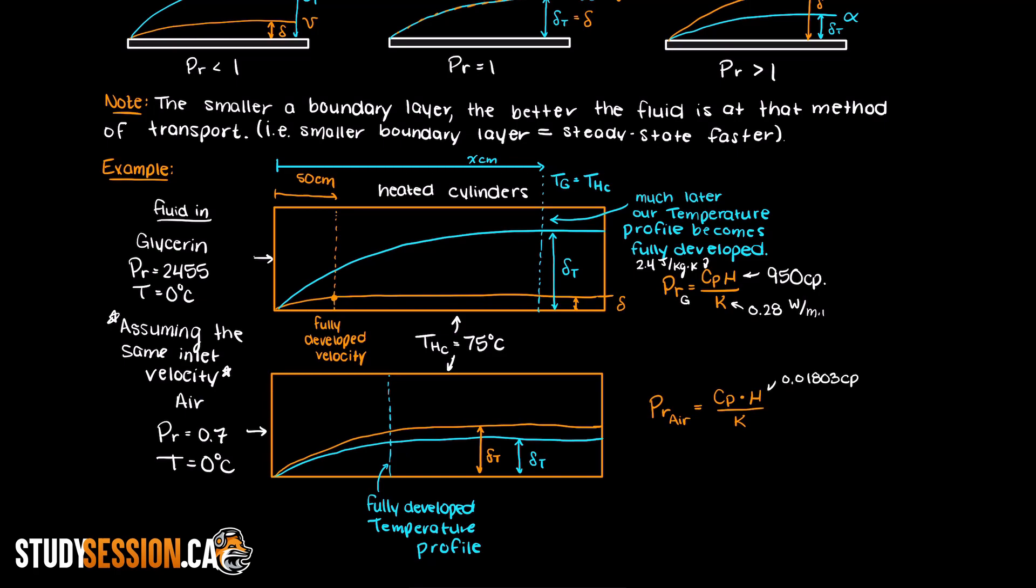As you can see here, air is much, much less viscous than the glycerin, and this allows for easy mixing, thus allowing it to transfer the energy from the walls of the cylinder much quicker than in the glycerin. Additionally, air will have a lower specific heat, meaning it takes less energy to heat it up. And lastly, the thermal conductivity of the air isn't all that much different than glycerin's.